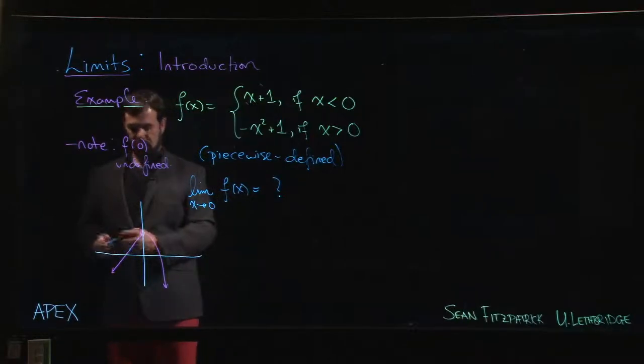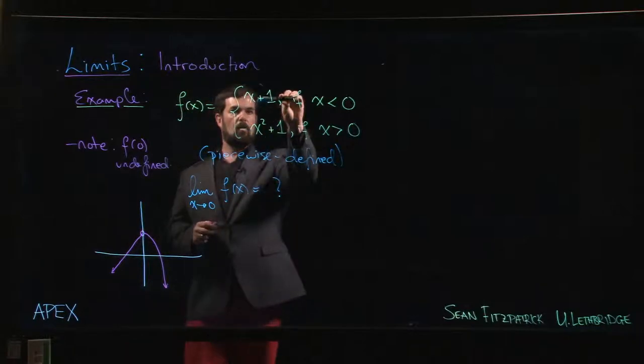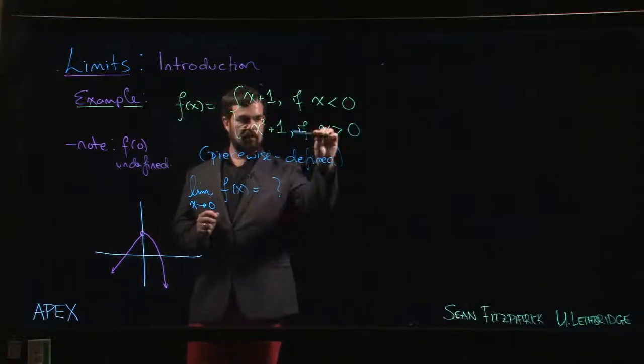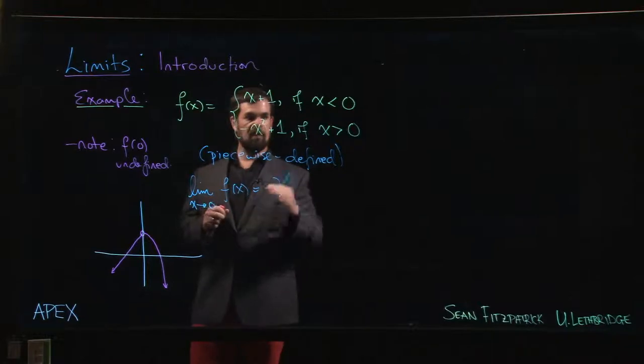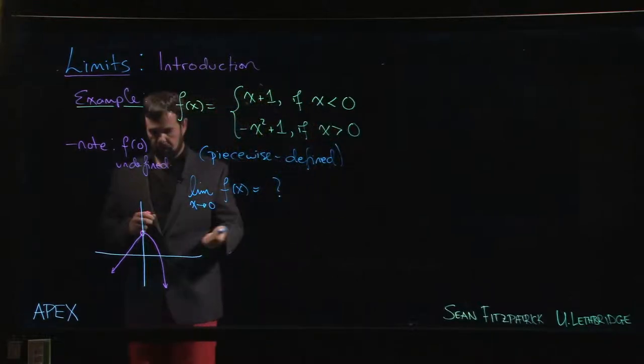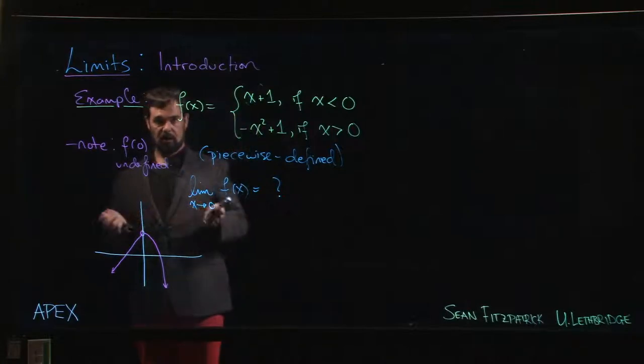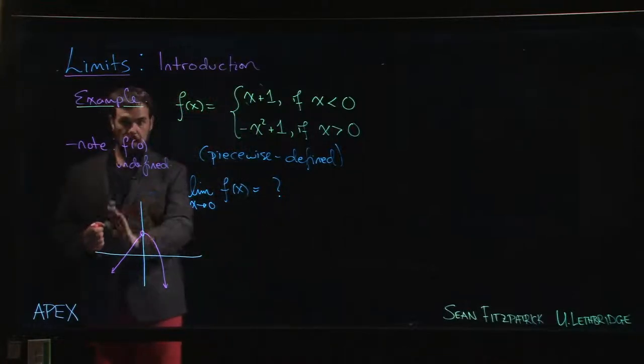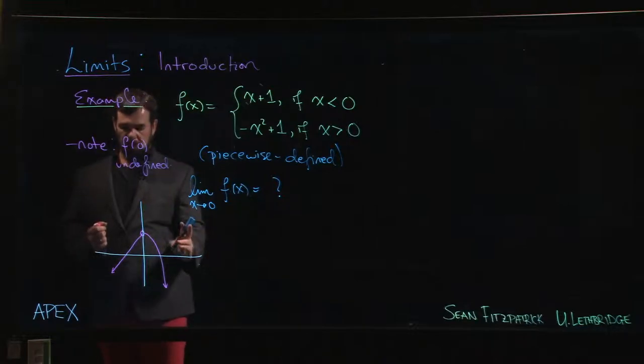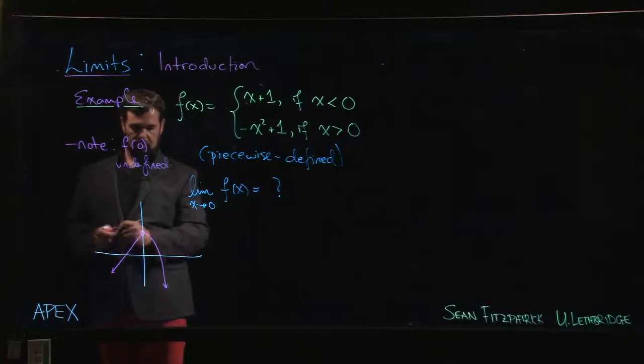Well it certainly looks like there is a common value here that the function is approaching as x gets close to 0, regardless of whether we're looking at negative x values or positive x values. We do have to consider the two separately because the function is given by different formulas in those regions.